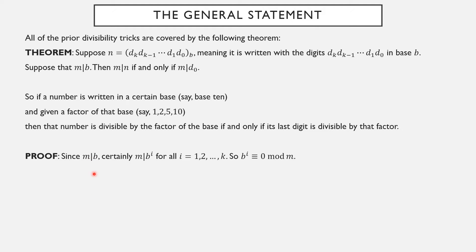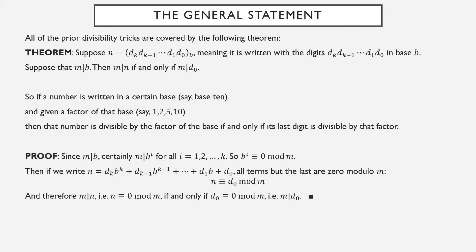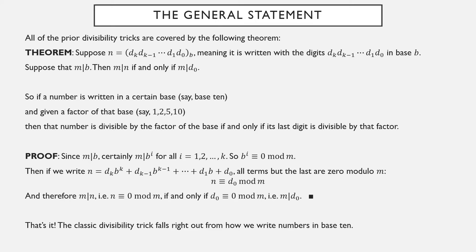As a proof: suppose m is a factor of b. Then it's definitely a factor of any power of b, so all powers of b starting with b to the first are equivalent to 0 modulo m. Writing n using its expansion in base b, since m is a factor of b, all of these higher-power terms are equivalent to 0 modulo m, meaning n is equivalent to its last digit modulo m. Therefore m is a factor of n — equivalent to 0 modulo m — if and only if the last digit d_0 is equivalent to 0 modulo m, i.e., m is a factor of d_0.